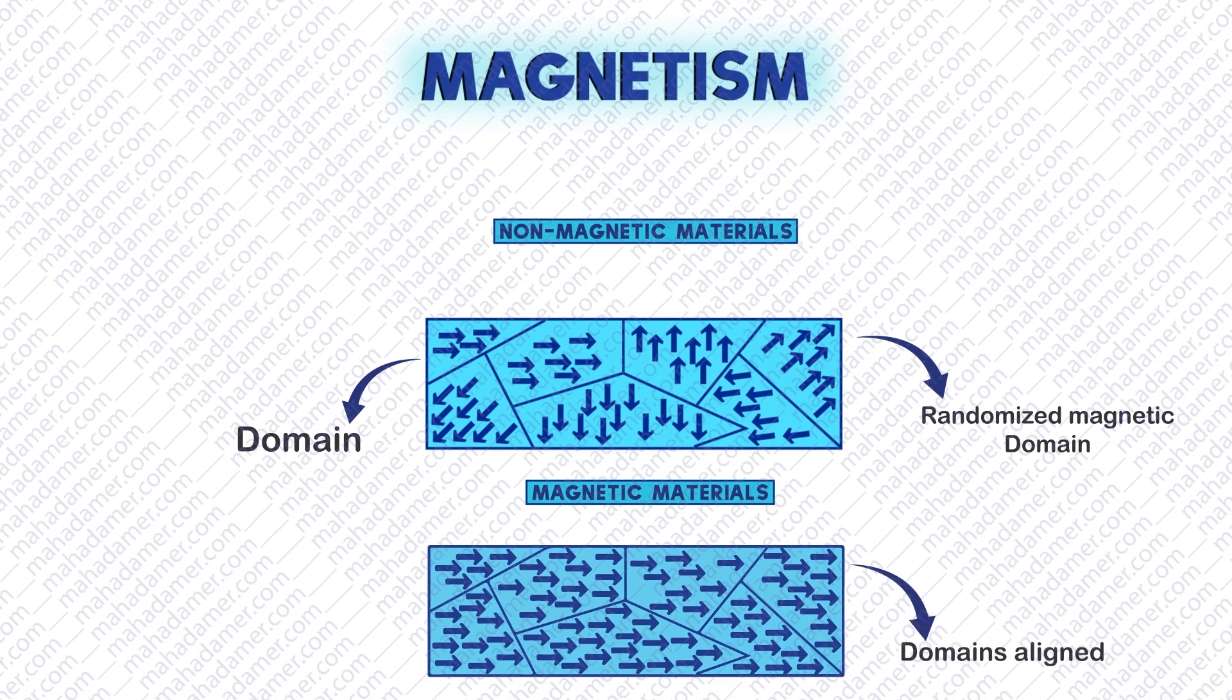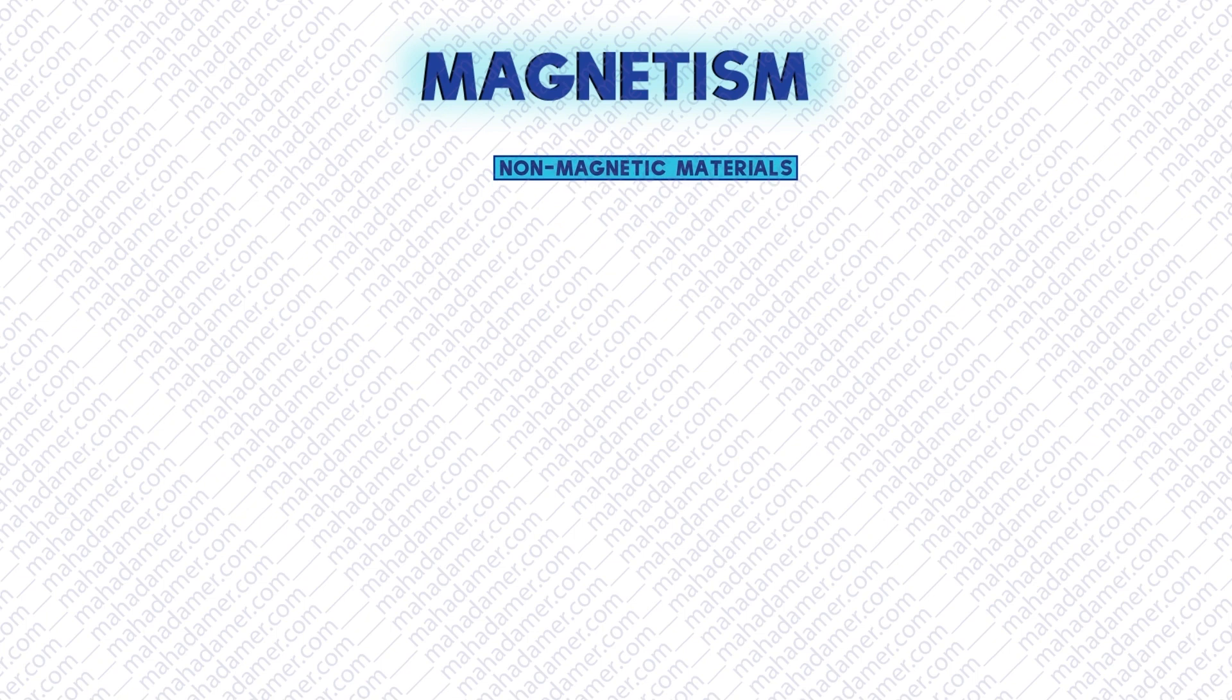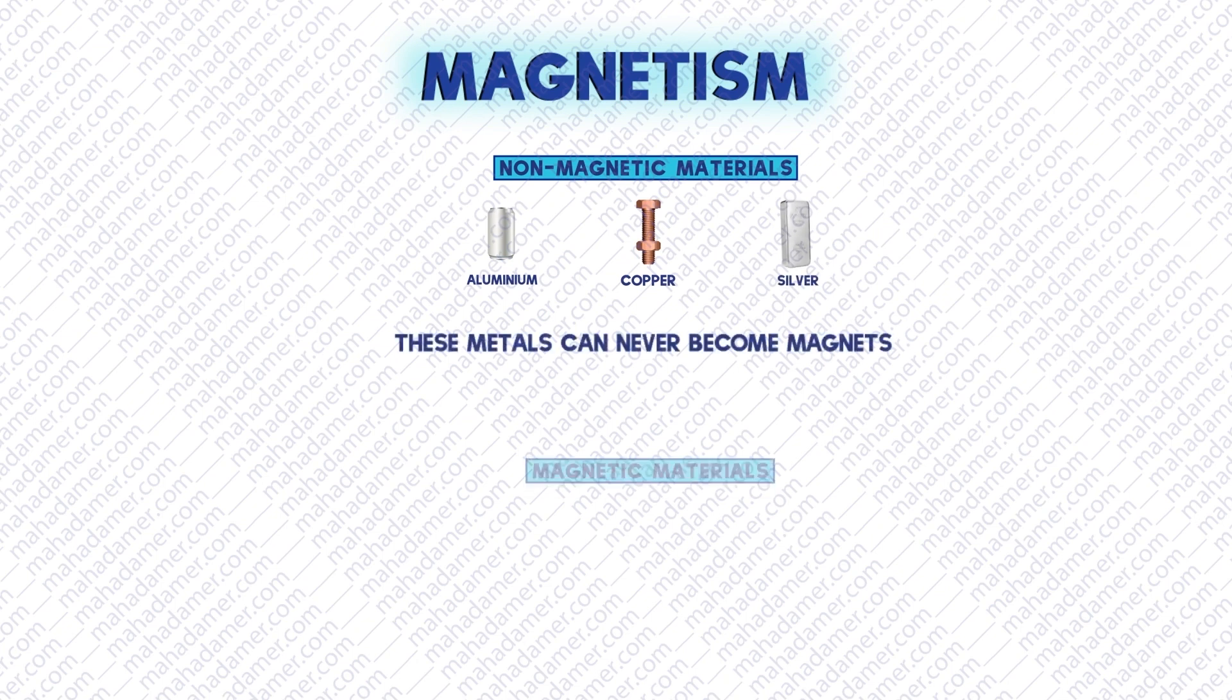But in magnetic materials, all domains are aligned in one direction. For example, some non-magnetic materials are aluminum, copper, and silver. They never become magnets. And some magnetic materials are steel, iron, and cobalt. They can become magnets.